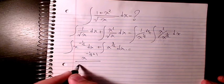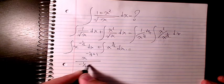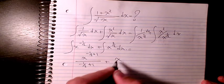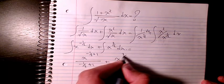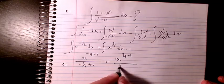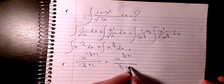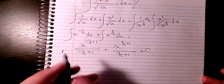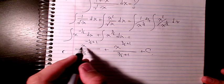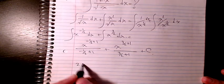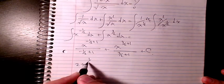So the integration will be x to the power of negative 1/2 plus 1, divided by negative 1/2 plus 1, plus x to the power of 3/2 plus 1, divided by 3/2 plus 1, plus C.